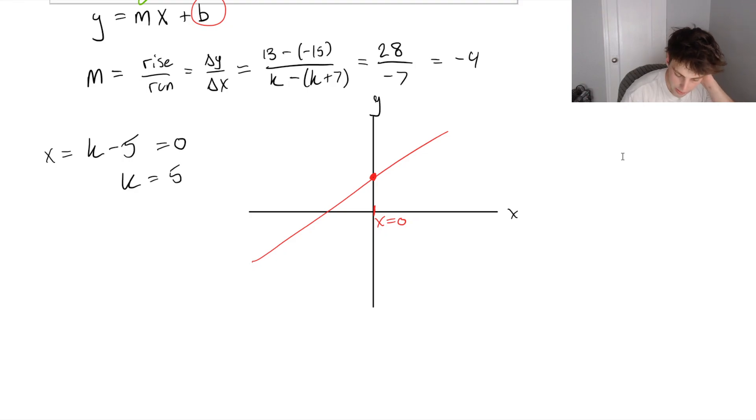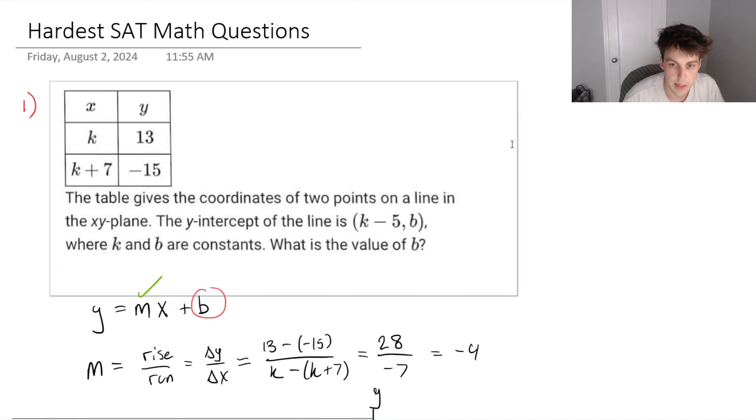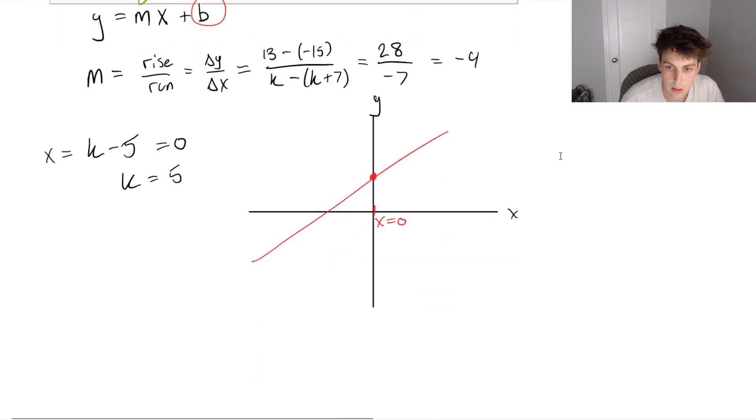Now we've got y equals mx plus b. So let's plug in a point. Let's choose, for example, our first point in the table, k, 13. So we now have y equals minus 4x plus b. Our y value is 13. Our x value is k. And we know that k is just 5 plus b.